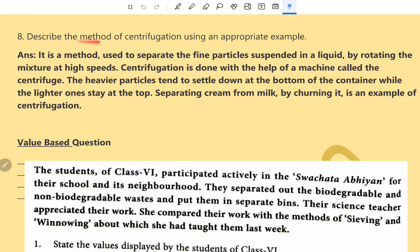Question number 8. Describe the method of centrifugation using an appropriate example. Centrifugation is a method used to separate the fine particles suspended in a liquid by rotating the mixture at high speed. Centrifugation is done with the help of a machine called the centrifuge. The heavier particles tend to settle down at the bottom of the container while the lighter one stays at the top. Separating cream from milk by churning is an example of centrifugation.